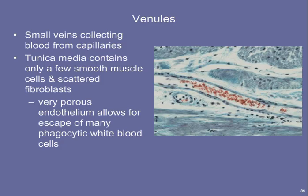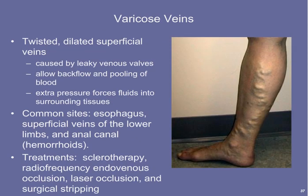Just as we have arterioles, we also have venules — very small veins that connect to capillaries. Their tunica media contains only a few smooth muscle cells, and their endothelium is very porous, readily allowing diapedesis — the movement of white blood cells out into surrounding tissues. A common venous disorder is varicose veins: twisted, enlarged superficial veins seen in the legs. The valves begin to leak, causing blood to pool in the lower extremities and distend the vessel walls. Common sites include the anal canal, where they're called hemorrhoids, and the esophagus, where they're called esophageal varices. Treatments include sclerotherapy, radiofrequency endovenous occlusion, laser occlusion, and surgical stripping.